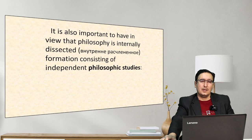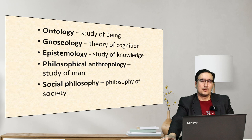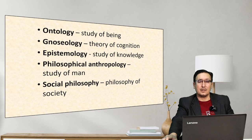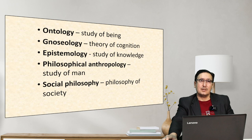Philosophy is an internally dissected formation consisting of independent philosophical studies: ontology — study of being; nosiology — theory of cognition; epistemology — study of knowledge; philosophical anthropology; and social philosophy. Ontology studies being — all the things by which we are surrounded, every material object. Nosiology asks: is our world recognizable? Epistemology is tied to whether we have true, valid knowledge.